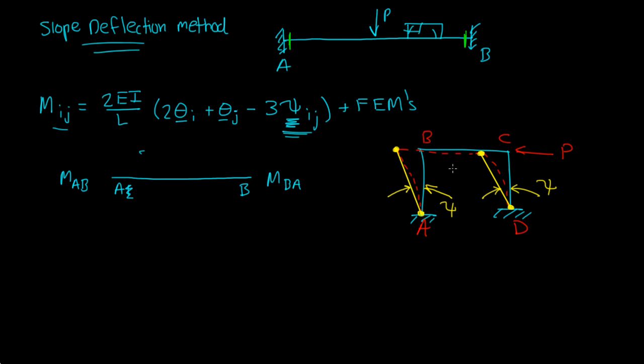Right? The next thing I want to talk about is sign convention. So if you, let's say you cut this AB, cut this member AB, sign convention for the slope deflection method when you're drawing these moments is clockwise for the ends of the members. Always. This is clockwise, this is clockwise, this is clockwise.